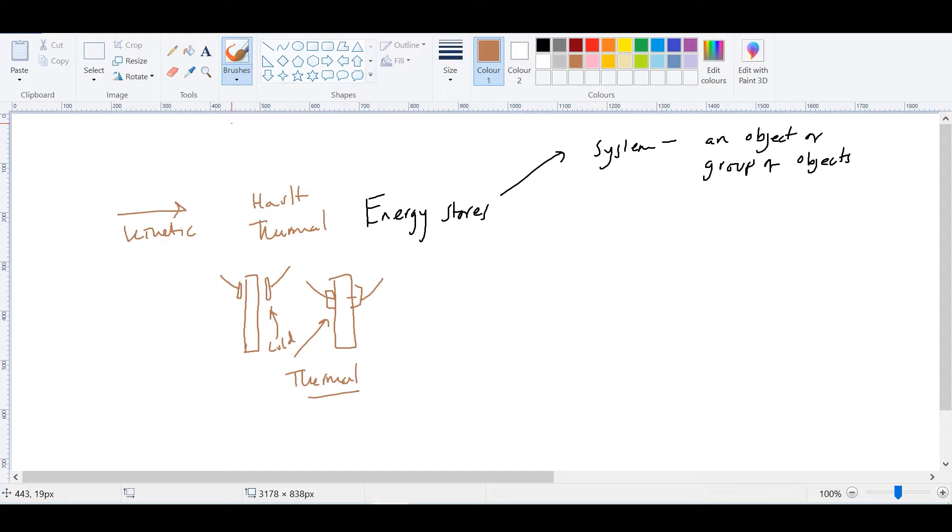So we've already come across our first formula and that is calculating energy. The first calculating energy formula is kinetic energy. So let's write it down. So the formula is E equals a half mv squared, where m is the mass, v is the velocity.